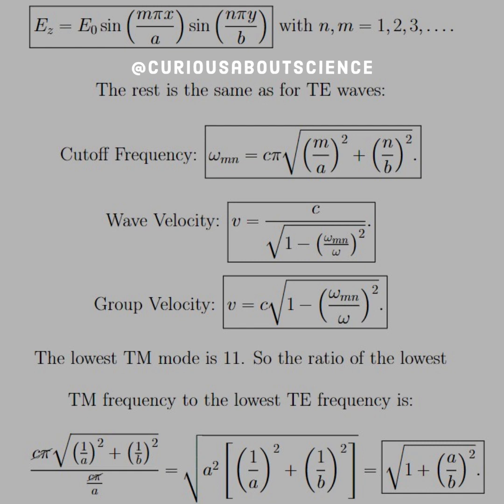Similarly, the rest is the same as for TE waves, where the cutoff frequency is given as cπ times the square root, wave velocity is given as one over that ratio, and group velocity is the same thing. Nothing really crazy.